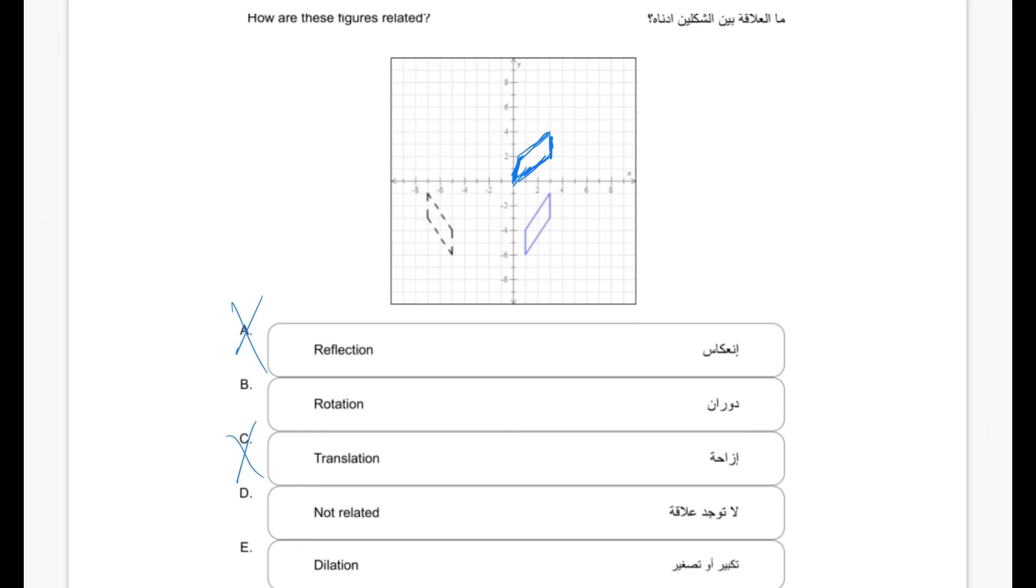If we take a look at dilation, this is also wrong because dilation means we are either zooming out or zooming in - the object is going to be bigger or smaller depending on the operation. If I'm going to say 'not related,' this is a tricky part which is wrong because there is a relationship between these objects, which is rotation.